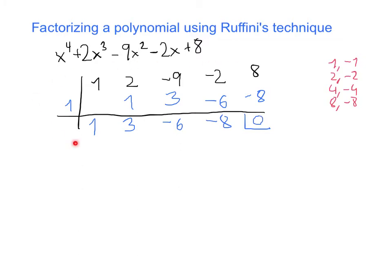This is going to be the way in which you factor it by Ruffini. This is the algorithm. And whenever you get a 0 over here, it means that this is a root. This 1 here is a root, the root of this polynomial.